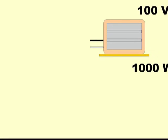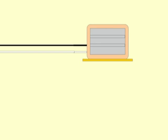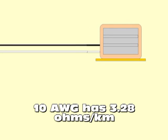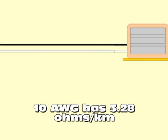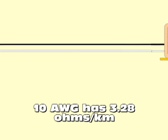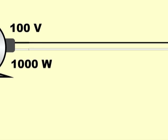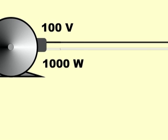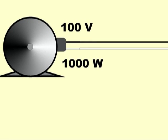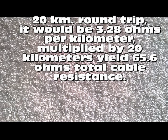Now suppose that the owner of a house located 10 kilometers away from the generator requests electrical service, and the connection is made using 10 gauge wire. The 10 gauge cable has a resistance of 3.28 ohms per kilometer. Two wires are required — one going from the generator to the heater and the other going back. Each wire is 10 kilometers long, so the round trip is 20 kilometers, meaning the cable will have a total resistance of 3.28 multiplied by 20, that is 65.6 ohms.